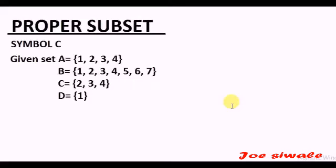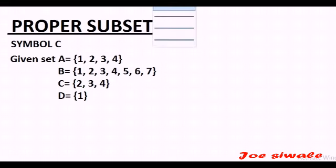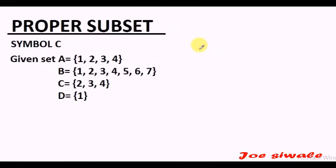A set is said to be a proper subset of another set if all the elements of that set are contained in another set, but the other set has some elements that are not contained in that first set. So the second set has some elements that are not in the first set. I'll give an example.